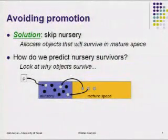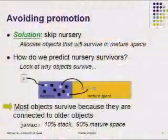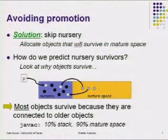How can we avoid promotion? The obvious solution is to skip the nursery — allocate objects that will survive directly in the mature space. But we need a way to predict which objects are going to survive. Objects survive because of pointers from the stack — some variable in the program is still using an object. Another way is pointers from the mature space into the nursery space. Since we're only collecting the nursery, we have to assume those pointers are still alive.